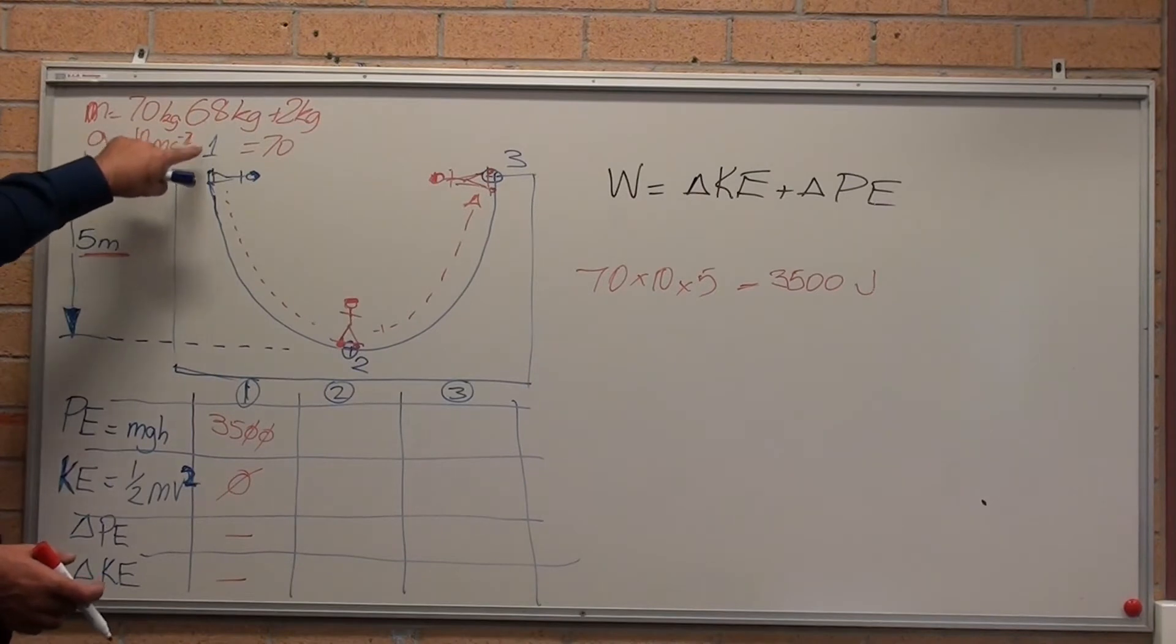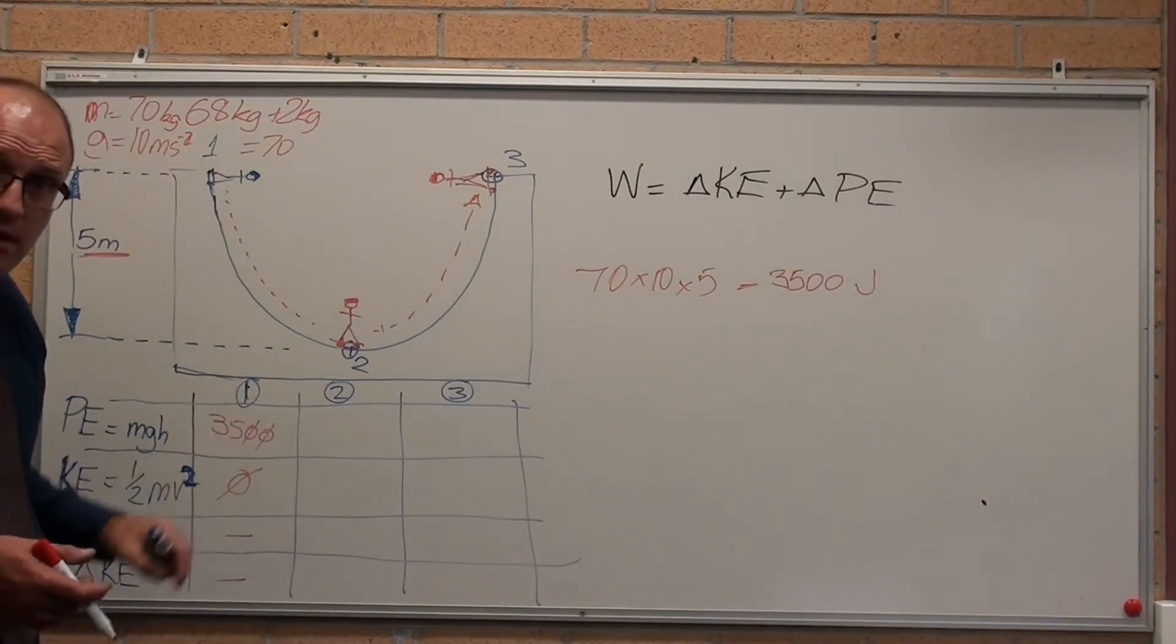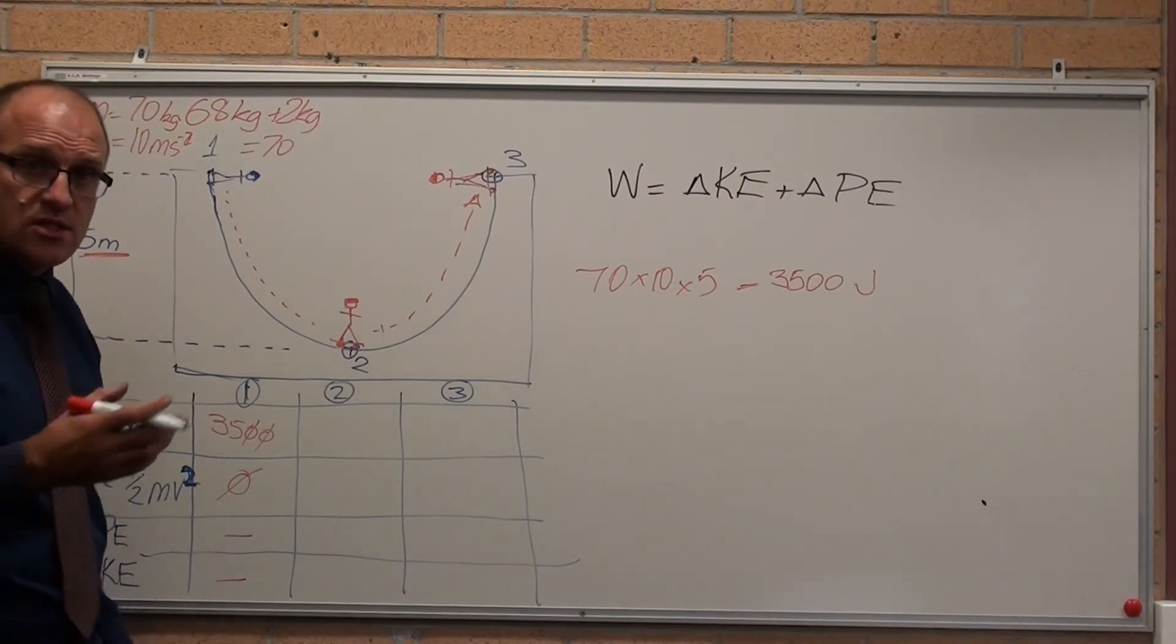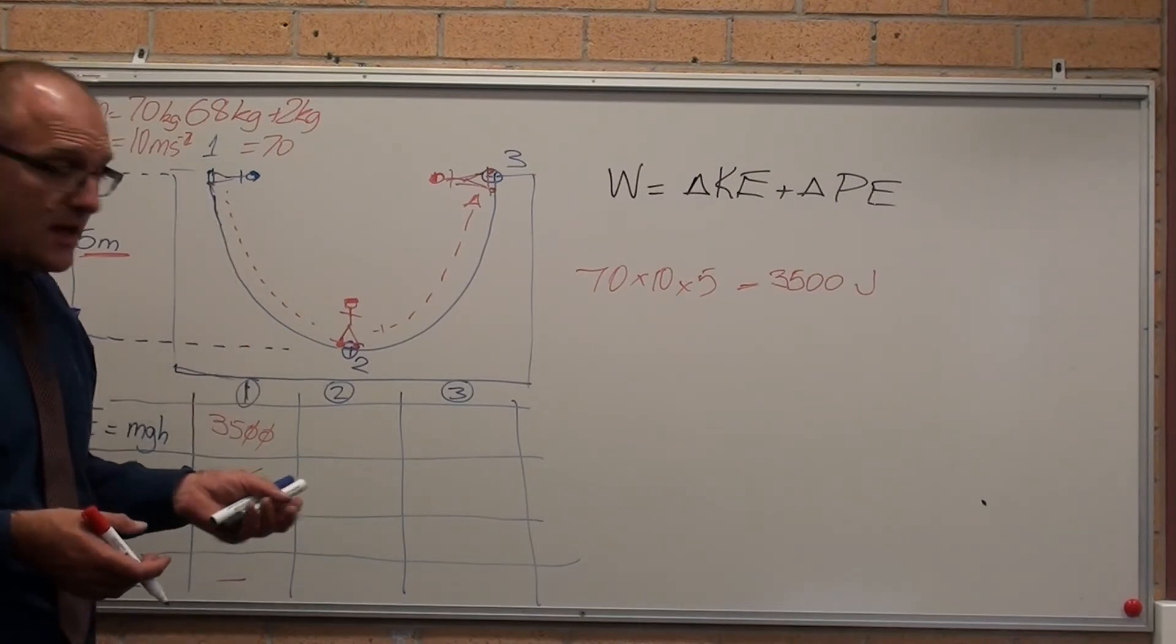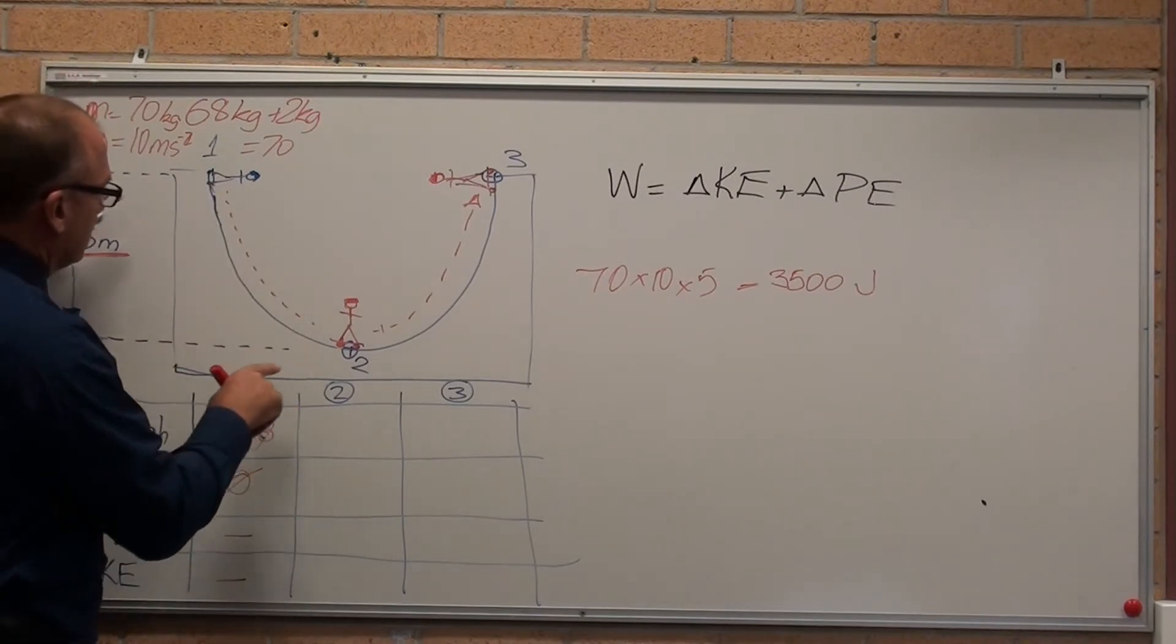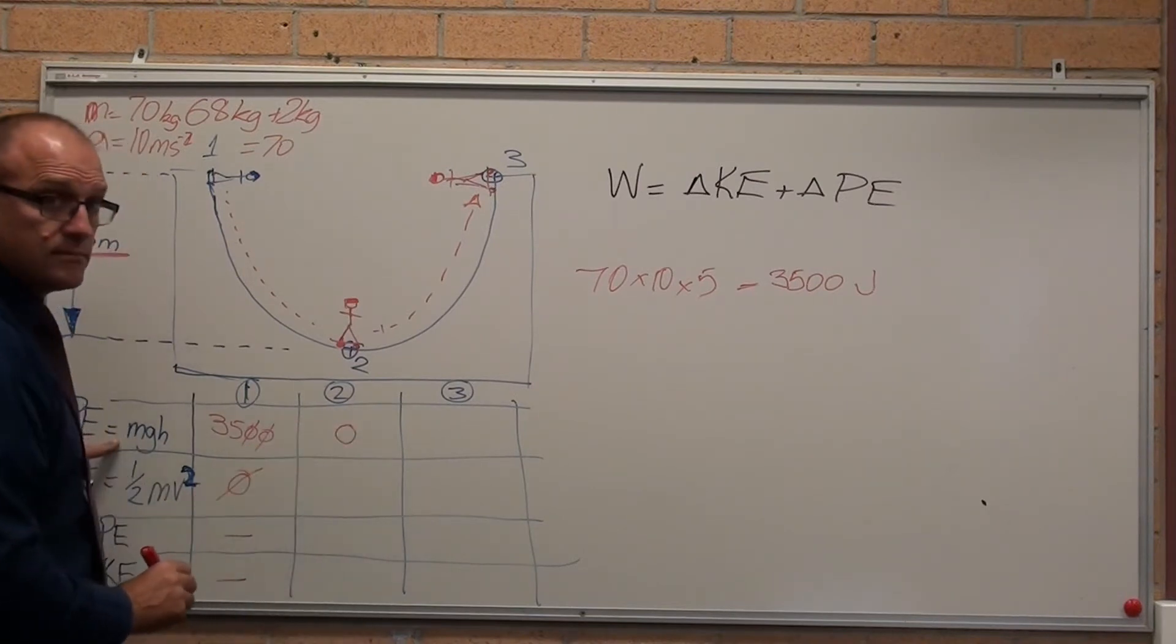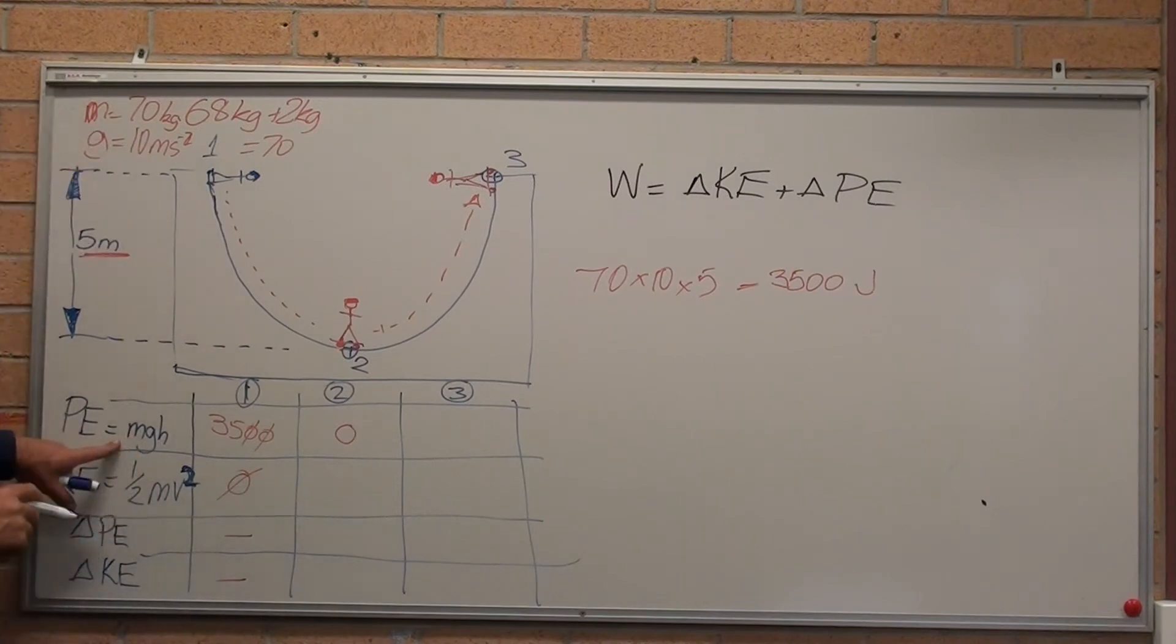Let's now let him roll down this half pipe with no friction, with no heat losses, with no noise losses, with no air resistance. That's the ideal case. Now, potential energy is zero. Down here, he's lost all potential energy, because height is zero.